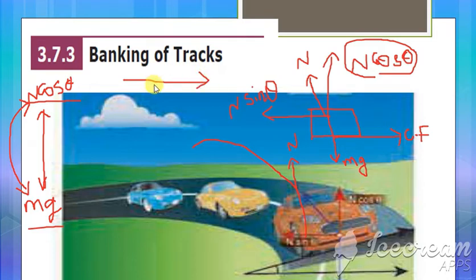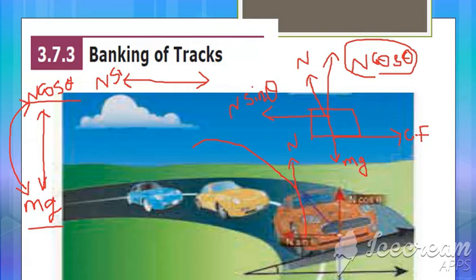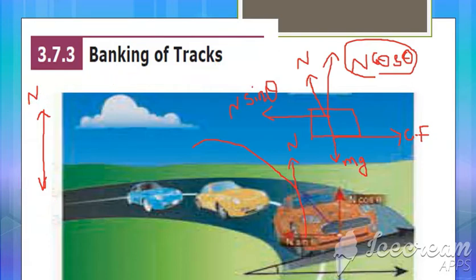So N cos theta is equal to mg. In the same way, when you look along the x component, we have N sin theta. N sin theta equals the centripetal force. So we can say that N sin theta is equal to the centripetal force. This is what we have seen from this diagram, and we will be deriving the equation for the velocity.